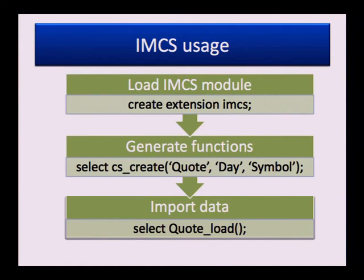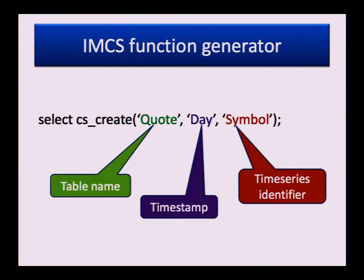How is IMCS used? The first step is obvious: we just create the IMCS extension. The second step is more interesting. The CS_create function generates special functions in PL/pgSQL and special types which can be used to access the column store. The first parameter is the table name — just a normal Postgres table — and the second and third parameters are names of attributes in that table.